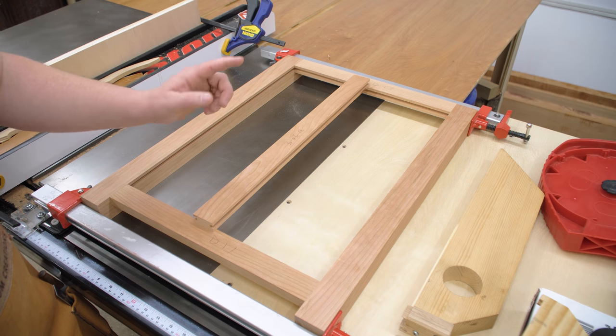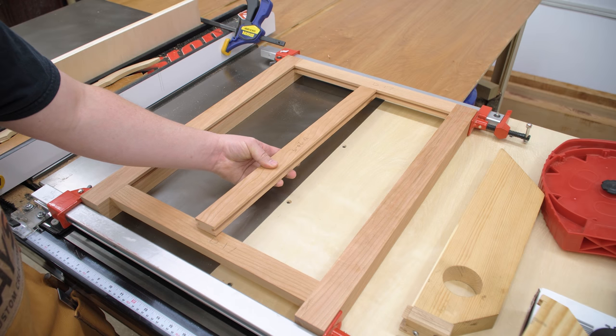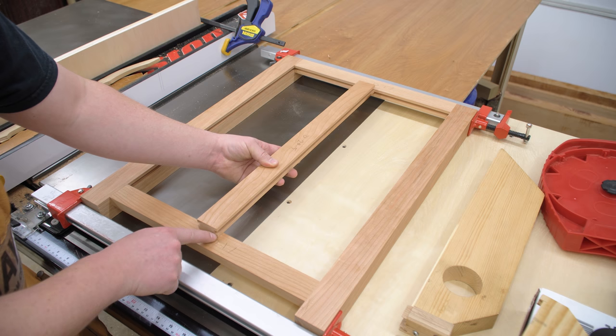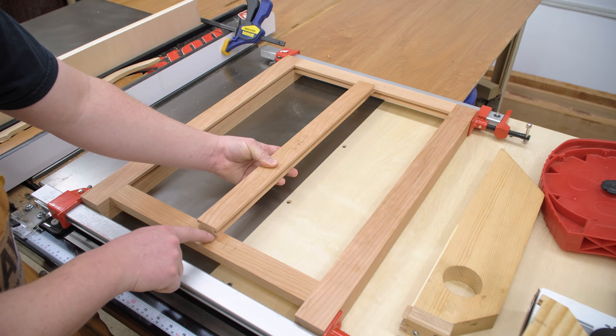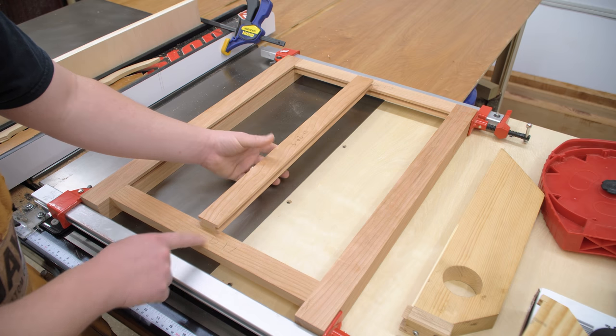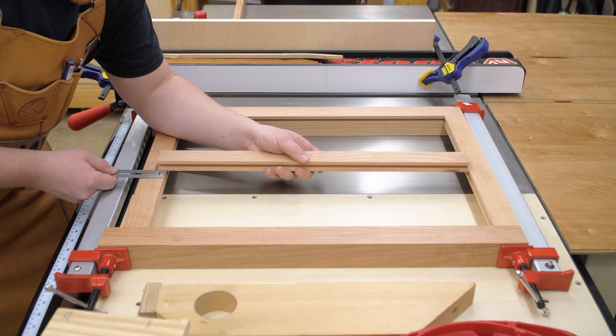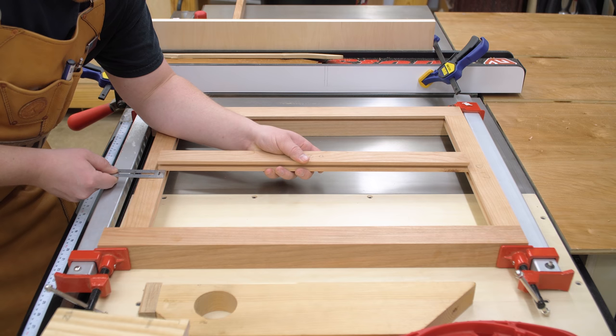Now I need to determine the length of the tongue. Whatever I do on one side, I need to do on the other side. The easiest way is to simply push this up against the inside face up there on the front and measure this overhang. Whatever this distance is, I'll divide by two and set that as my distance from the left side of the blade to the fence. That will remove half of that distance on each end, which should result in a perfect fit. The distance from the top of the rail to the bottom of the stile is dead on at half an inch, so I'm still accurate to my SketchUp model. I'll set the fence to remove one quarter of an inch.